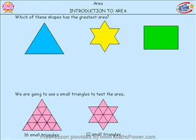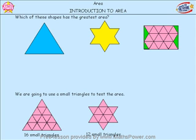Let's now go to the green rectangle. 1, 2, 3, 4. Now this one doesn't fit exactly this way, so I'm going to turn it around. That makes 4. And when I keep counting, I get up to 18 full pink triangles, but there are still some gaps on the sides of the rectangle. So what do we do about that? We take one of our triangles and cut it in half.